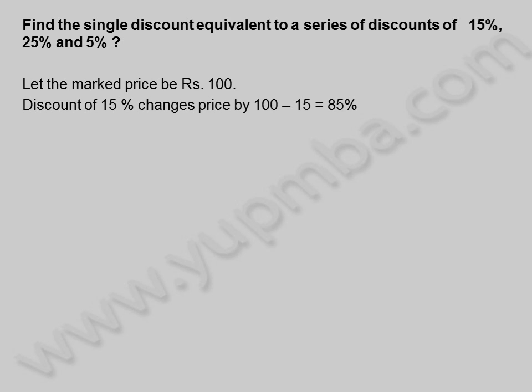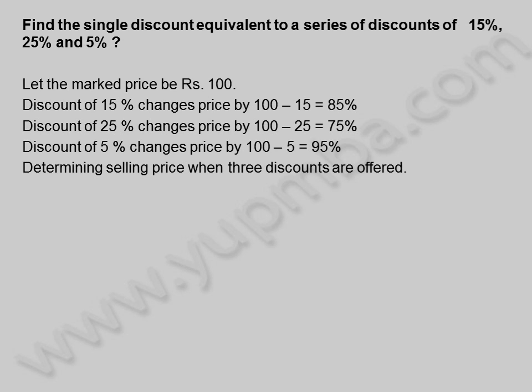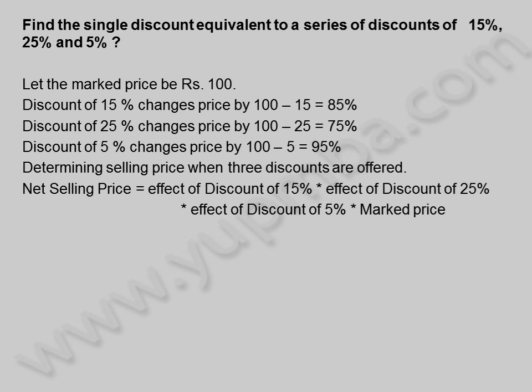Discount of 15% changes price by 100 minus 15, is equal to 85%. Discount of 5% changes price by 100 minus 5, is equal to 95%. Determining selling price when 3 discounts are offered. Net selling price is equal to effective discount of 15% into effective discount of 25% into effective discount of 5% into marked price.